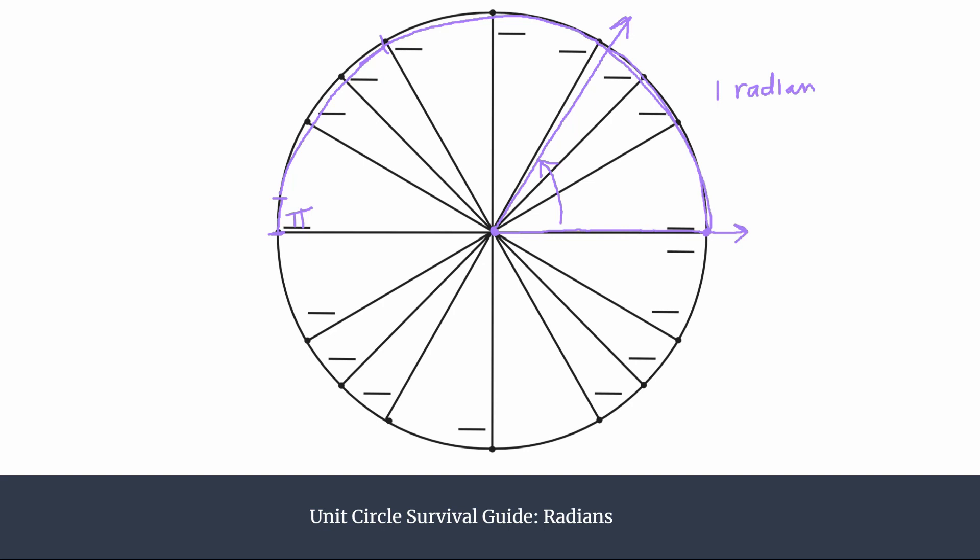There are some websites with really neat illustrations of this, great explanations. I'll link to some of those in the video description, so you can check those out if you're interested. But if you understand this and if you know that a half of a circle's rotation is pi radians, I think it makes it a lot easier to label using radians.